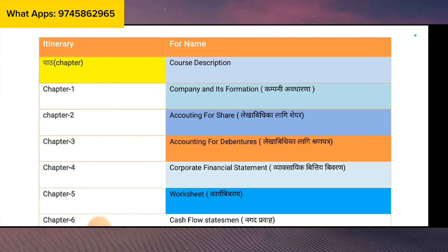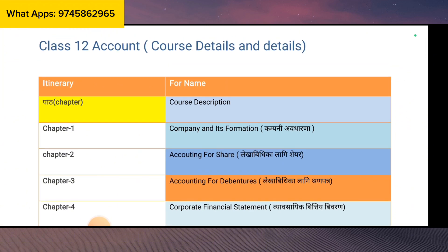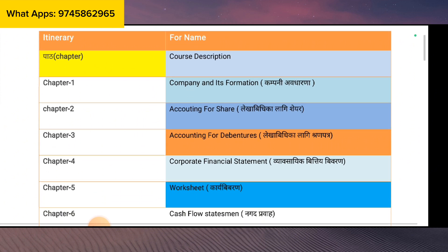In the description box, you can find the Class 12 course content details and its features. You can see them and download them. Chapter 1 is Company and its Formation. You can see the share types.